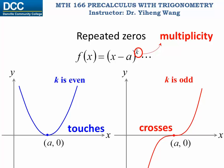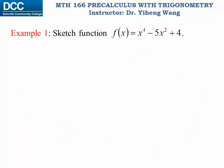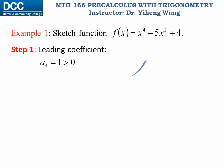Now we are ready to sketch the graph of a polynomial function. Example 1: sketch f(x) = x⁴ - 5x² + 4. The highest power of x is 4, so this is a fourth-degree polynomial. Step 1 — leading coefficient test: the leading coefficient is 1, which is positive, so the right tail goes up. Step 2 — degree: the degree is 4, an even number, so the left tail goes in the same direction as the right tail — also up.